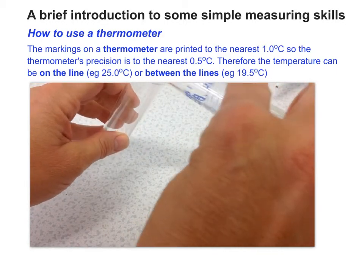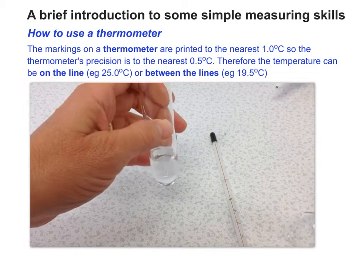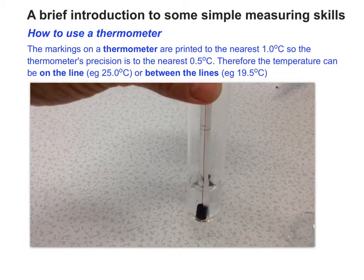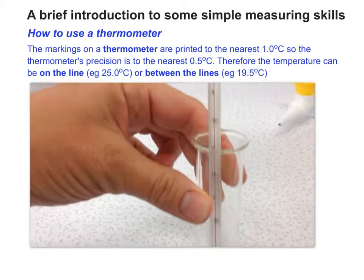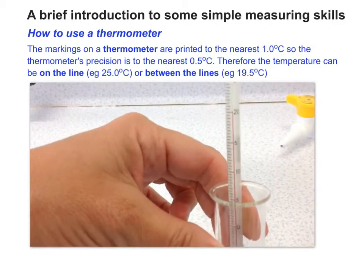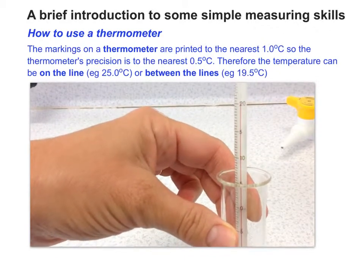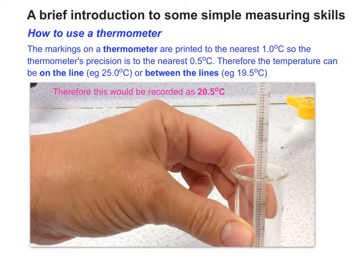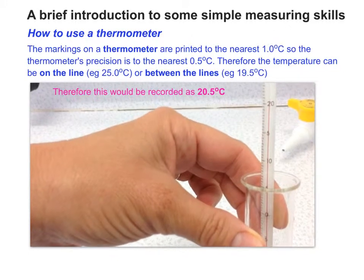At the start of the experiment, I'm going to transfer the 10 cubic centimetres of liquid into a clean boiling tube and measure the initial temperature. I need to put the thermometer in the solution and wait a little while to make sure that the thermometer is reading accurately and hasn't changed. Here we can see the value is above 20, but below the line for 21, so I'm going to record that as 20.5 degrees C.